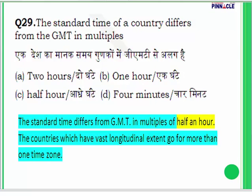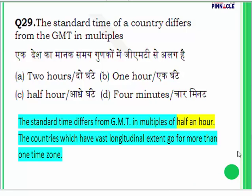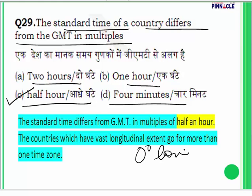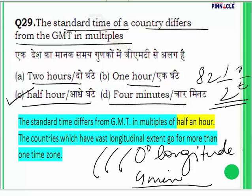Question 29: The standard time of a country differs from GMT (Greenwich Mean Time) in multiples of — 2 hours, 1 hour, half an hour, or 4 minutes? The answer is half an hour. GMT is the time on the 0-degree longitude. For every 1 degree you move east or west, there is a difference of 4 minutes. India has taken 82.5 degrees East as its standard meridian. For countries, time differs from GMT in multiples of half an hour.